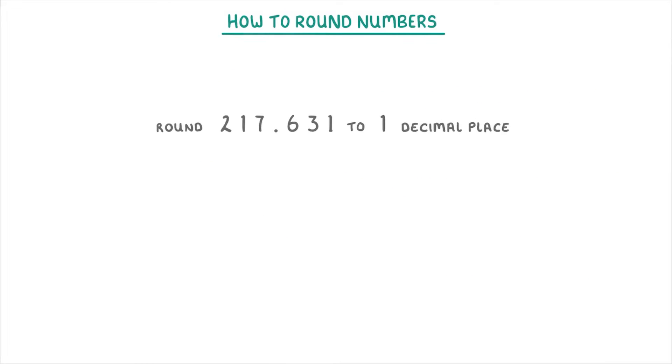In this next one, we're being asked to round 217.631 to one decimal place. So because we're rounding to one decimal place, our last digit will be this 6, because that's one place to the right of the decimal point. And so the 3 will be the decider.